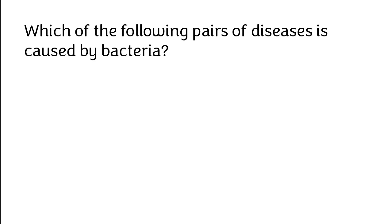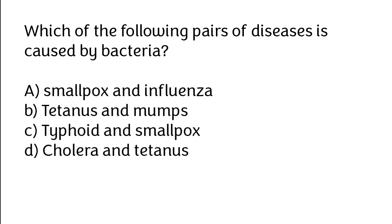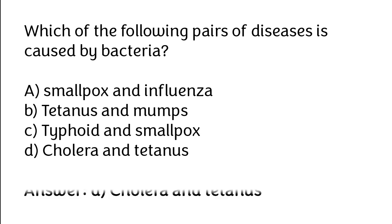Which of the following pairs of diseases is caused by bacteria? Smallpox and influenza, tetanus and mumps, typhoid and smallpox, or cholera and tetanus. The correct answer is option D: cholera and tetanus are a pair of diseases caused by bacteria.